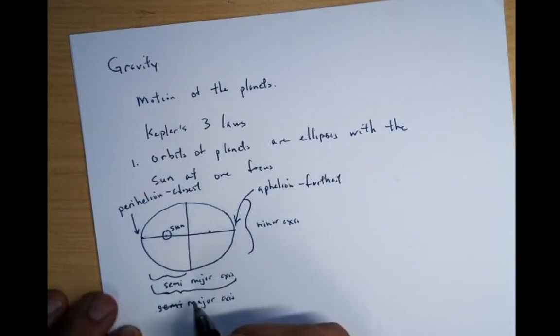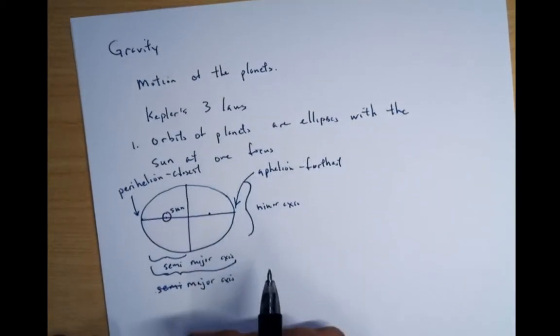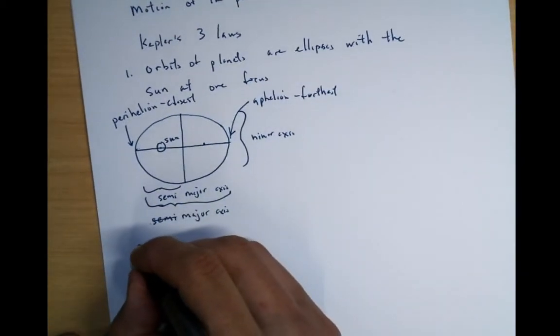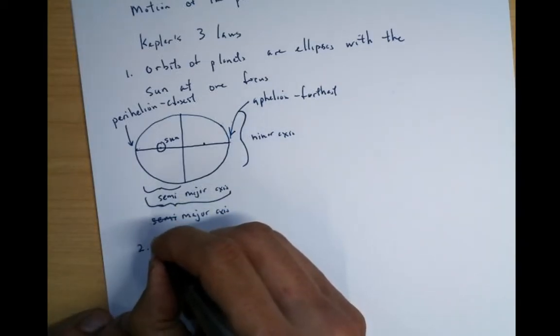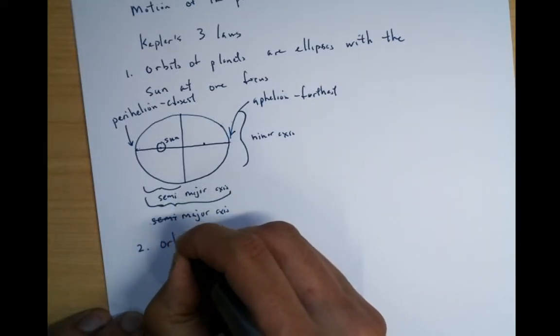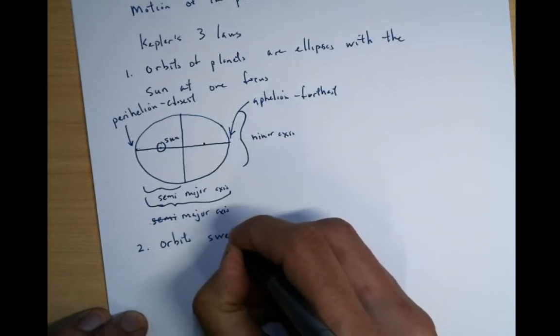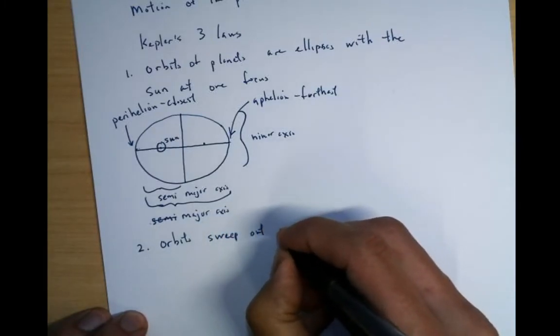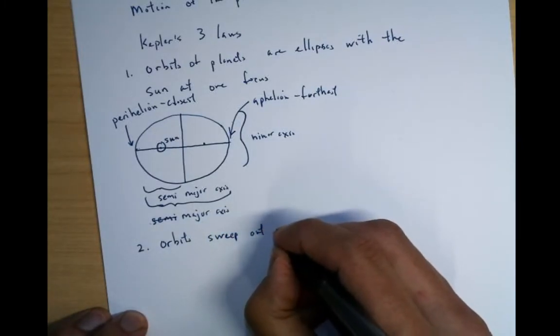So that's the first thing. So basically, he said the shape of the orbits are these ellipses. Second thing he said is that orbits sweep out equal areas.